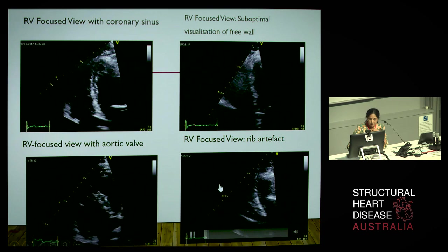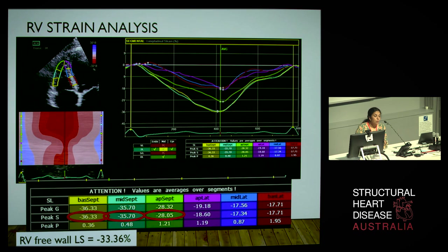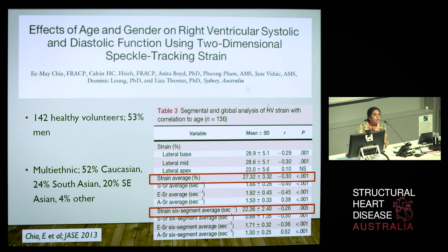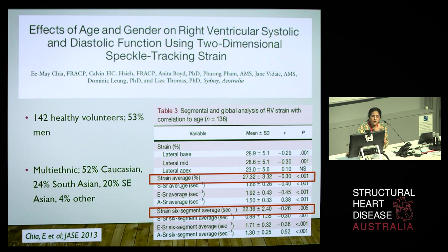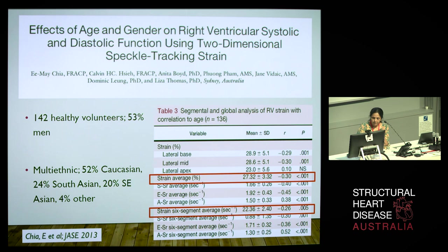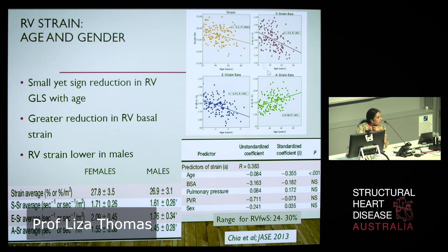We use the left ventricular strain package, trace six segments, and measure free wall strain, which is an average of basal, mid, and apical segments. Work done by Ime Chia, looking at 142 healthy volunteers in a multi-ethnic population, showed that the average free wall strain of three segments was minus 27%. If you take six segments including the septum, RV strain is actually lower. She also showed a gradation with RV strain decreasing with age, and RV strain is slightly lower in males than females.